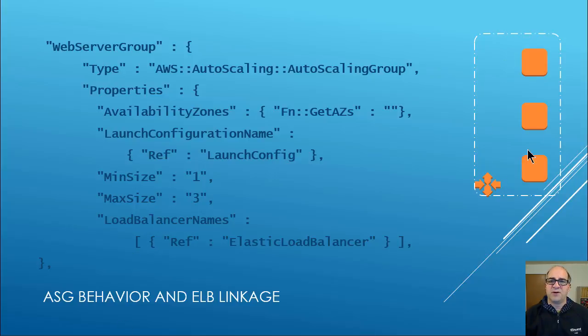This web server group — the autoscale group — is really these nodes here. I should have left the orange boxes and dotted line boxes to represent the different availability zones, but I didn't.